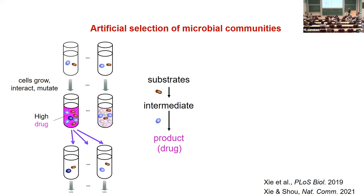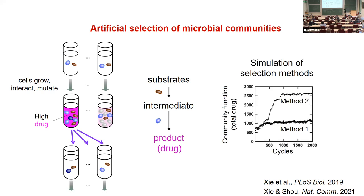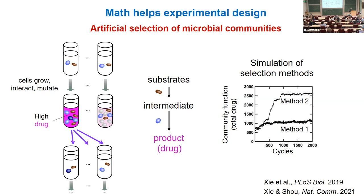This seems simple — you get what you select for. But in reality, previous experimental efforts have been at best moderately successful, because there are many experimental variables you can change and it's not clear what the best approach is. We performed simulated experimental protocols for different methods and found the efficacy differs substantially. Because of simulations, you can save all the intermediate steps and do troubleshooting far more effectively than doing experiments. So math helps experimental design.